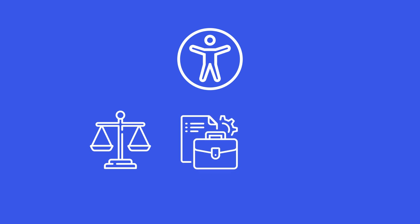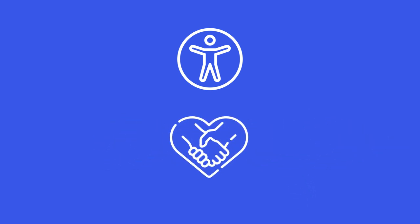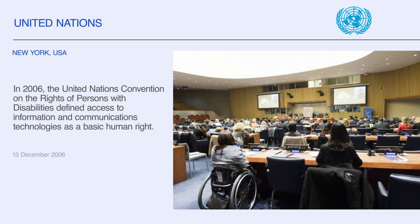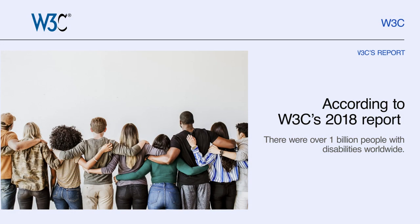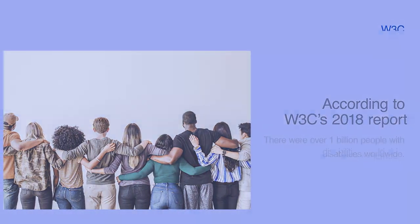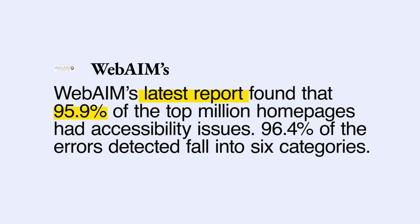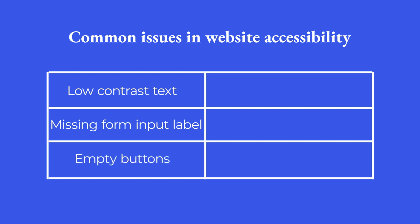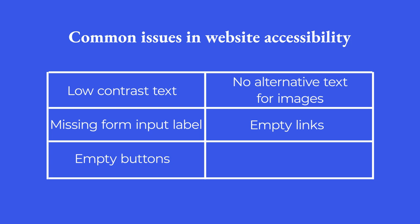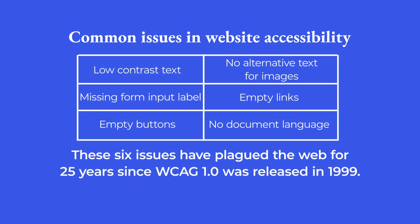More than the legal compliance, commercial liability, and financial implications, it's about fundamental human rights. In 2006, the United Nations Convention on the Rights of Persons with Disabilities defined access to information and communications technologies as a basic human right. According to the W3C's 2018 report, there were over 1 billion people with disabilities worldwide. And WebAIM's latest report found that 95.9% of the top million homepages had accessibility issues; 96.4% of the errors detected fall into six categories: low-contrast text, missing form input label, empty buttons, no alternative text for images, empty links, and no document language. These six issues have plagued the web for 25 years since WCAG 1.0 was released in 1999.